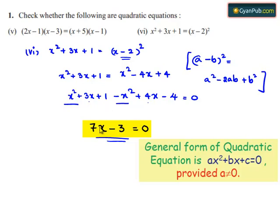If we observe the equation obtained is 7x minus 3 is equal to 0 and this does not resemble the general form of the quadratic equation. This is because in the equation obtained x square term is missing.